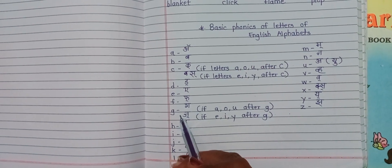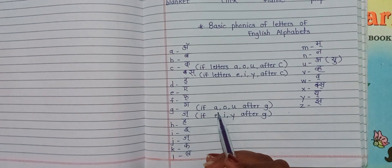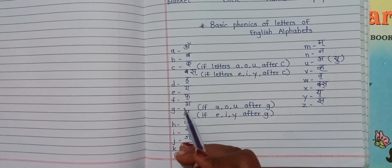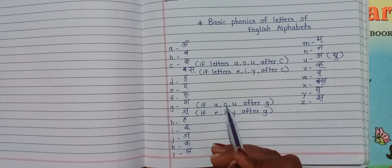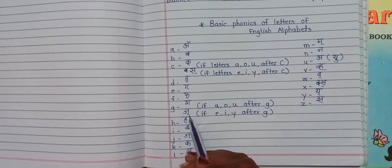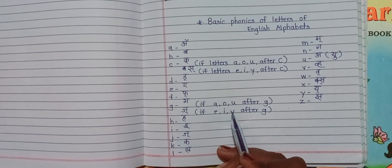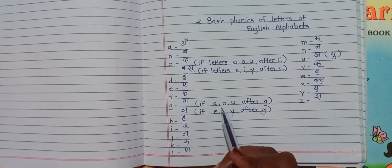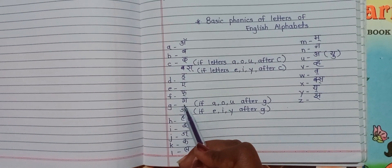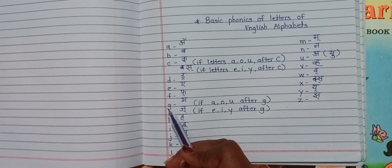Sometimes G says J. Same rule like C is followed here also. G pronounces G if it is followed by the letters A, O and U. G pronounces J if it is followed by the letters E, I and Y. You have to find the words when this is called as J and this is called as G.